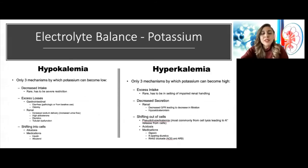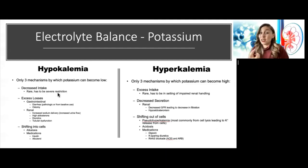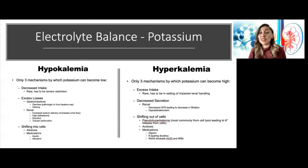Moving on to potassium. For both hypo- and hyperkalemia, there are only three mechanisms: a problem with intake, a problem with secretion, or shifting in and out of cells. For hypokalemia, severely restricted intake would have to be very severe because the kidney is so good at retaining potassium. More commonly there are excess losses — severe diarrhea, ostomy — or from renal losses where the primary etiology is almost always diuretics, as many are potassium-wasting. Shifting into cells from alkalosis or medications like insulin and albuterol can also cause hypokalemia.